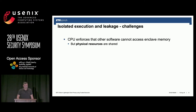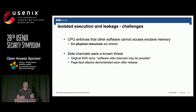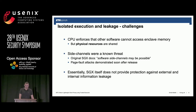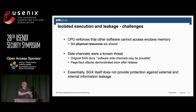So none of these straw-man solutions present an easy-to-apply solution. What are the challenges of isolated execution and leakage? The CPU does not force that other software cannot access the enclave memory — physical resources like the CPU cache are shared. Side-channel susceptibility in SGX is acknowledged even in the original documentation, and the first side channels were found almost immediately after the technology launched. SGX does not provide protection against external leakage — anything observable by the OS such as disk access, processing, or file storage — or against internal information leakage such as branching and control flow execution.